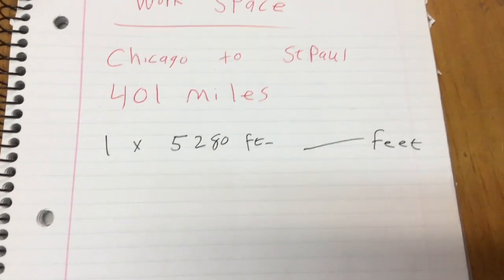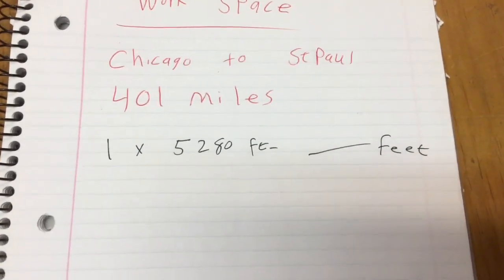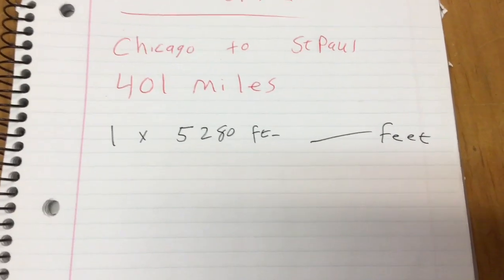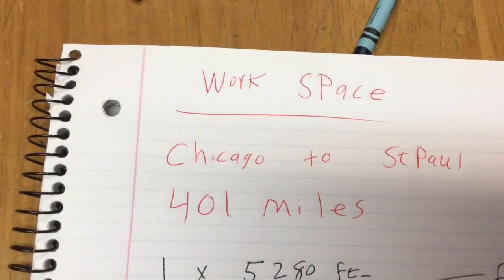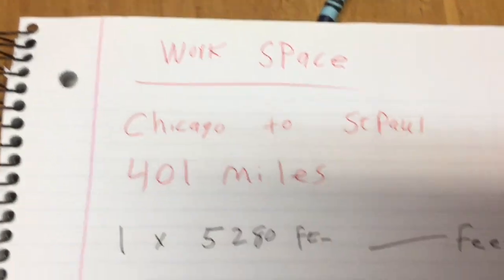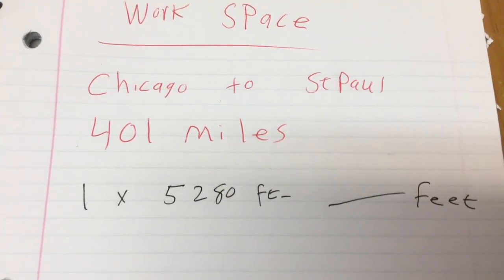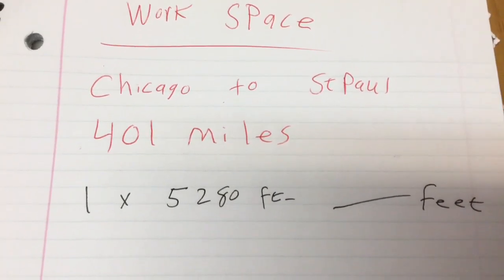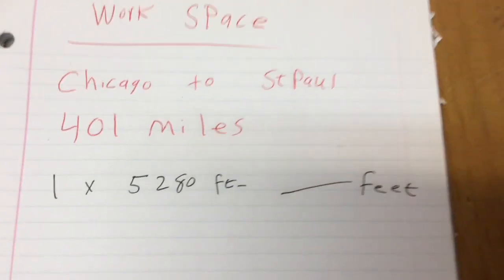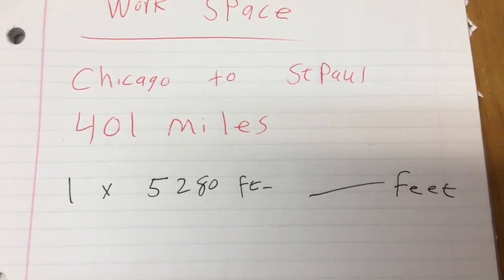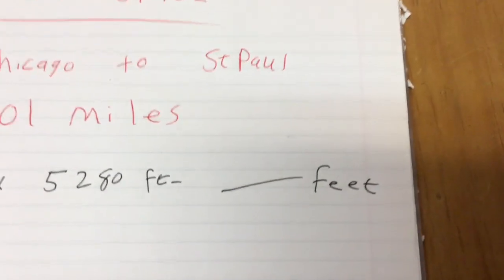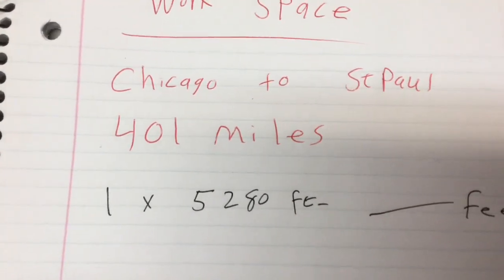If I was only going one mile, which I'm not, I would take one times 5,280 feet, and that would give me the amount of feet. But I'm not going a foot. I'm going 401 miles. So what I do is I take the distance, 401, and then I'm going to multiply that times 5,280. That will give me the feet. I know I want inches, but I need to get my feet first.